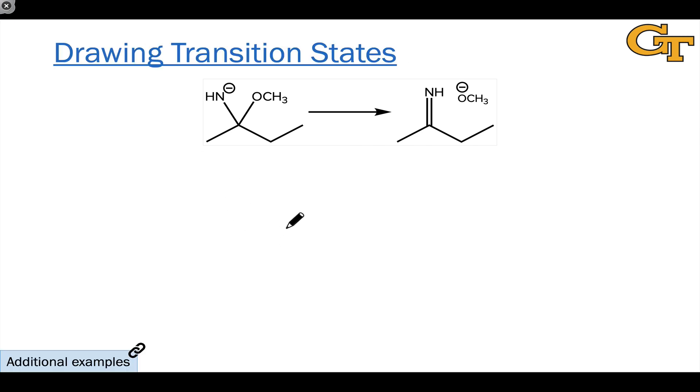Drawing transition states for uncatalyzed elementary steps is really a prerequisite for understanding catalysis on a mechanistic level. I have a video already that covers this in detail from Chem 2311. The link is here, or you can check out my Chem 2311 playlist on YouTube. But I did want to work through one quick example of this beta elimination elementary step here.